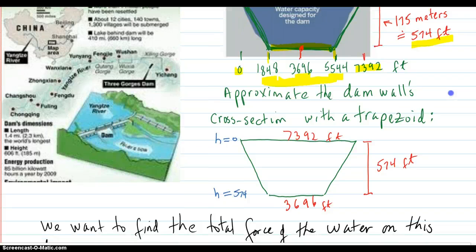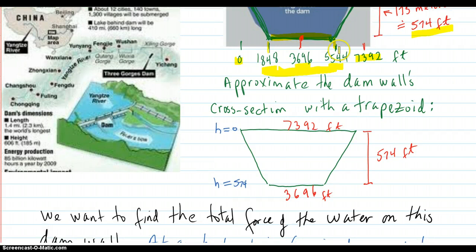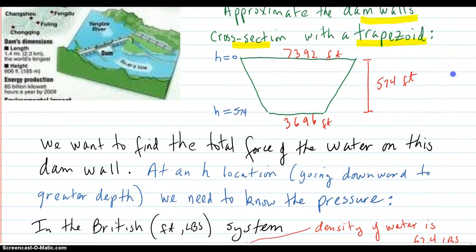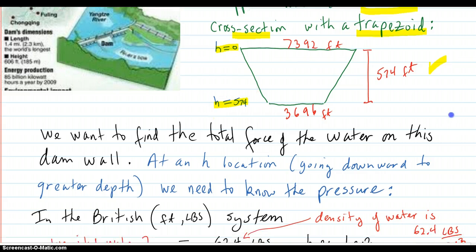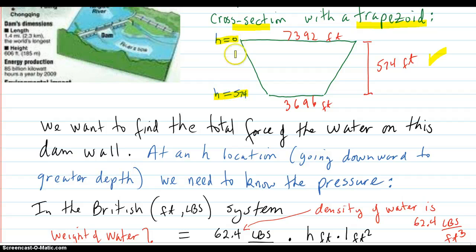Okay, so we did approximate the dam wall cross section with a trapezoid. So here is just a geometric picture right here and I have some depth markers here. H equals zero, I'm going to have a depth of zero up there and a depth of 574 feet down there. You can make these height counters go either way, but I decided to do it this way this time.